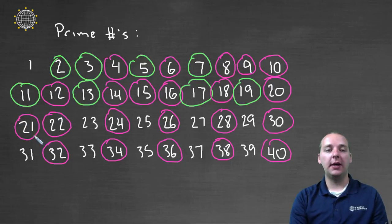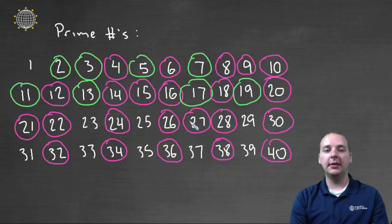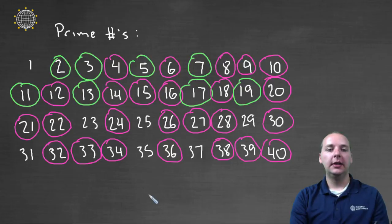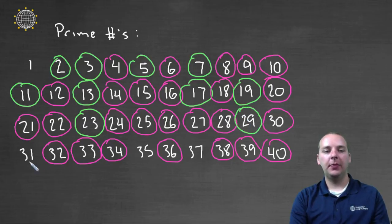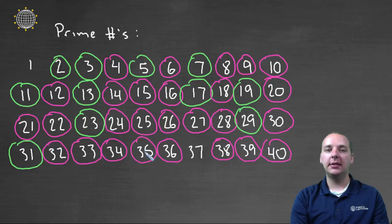So twenty-one is composite — three times seven. Twenty-seven is composite, because it's three times nine. Thirty-three is composite. Thirty-nine is composite, and so on and so forth. So we're really trimming down our list. Twenty-three is prime. Twenty-five is composite, because it's five times five. Twenty-nine is prime. Thirty-one is prime. Thirty-five is composite — it's seven times five. And thirty-seven is prime.